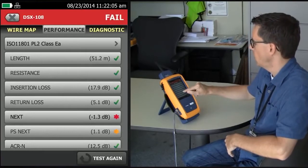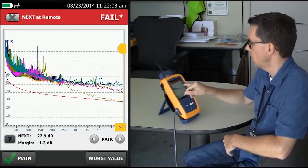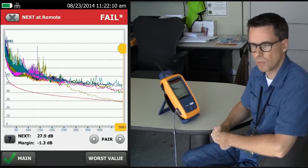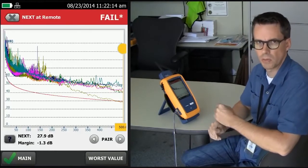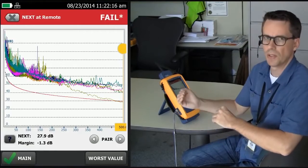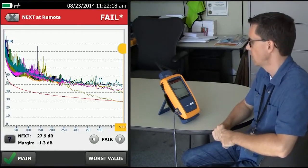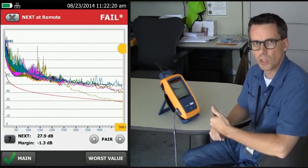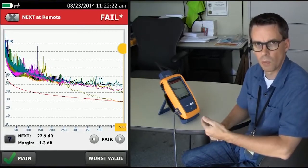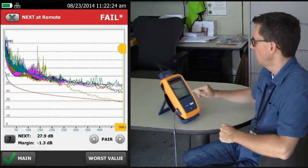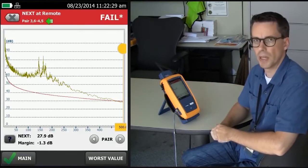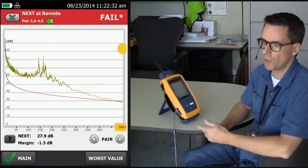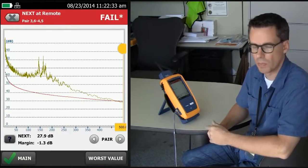If we tap on near-end crosstalk, in this particular example, it's jumped to the six measurements made from the far end. Crosstalk has made six measurements in one direction and then six in the other direction. We're interested in finding out which is the worst performing pair, because that's the one we want to diagnose. If I tap the pair arrow on the right here, we see that it's actually pair 3-6, 4-5. It could be 1-2, 7-8. It could be any of those combinations.